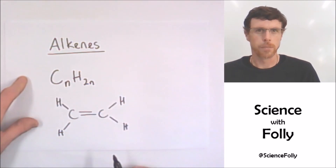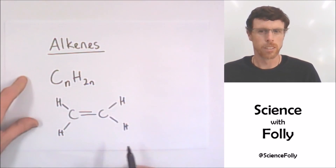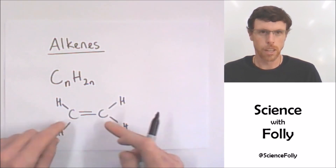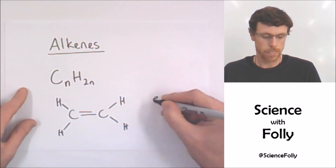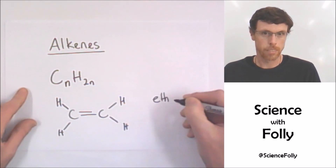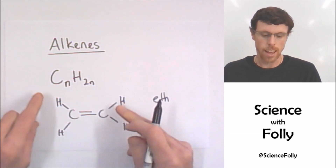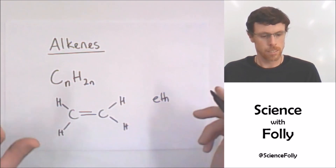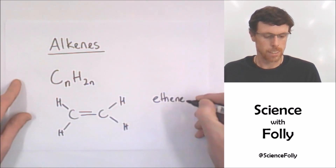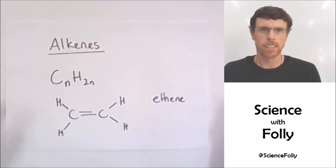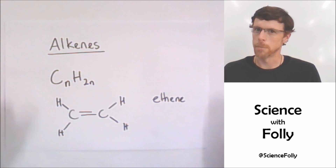The simplest alkene is this one. What do you think it's going to be called? It's got two carbons — that's an 'eth' — and it's an alkene, so we use the suffix 'ene'. Ethene. Easy.